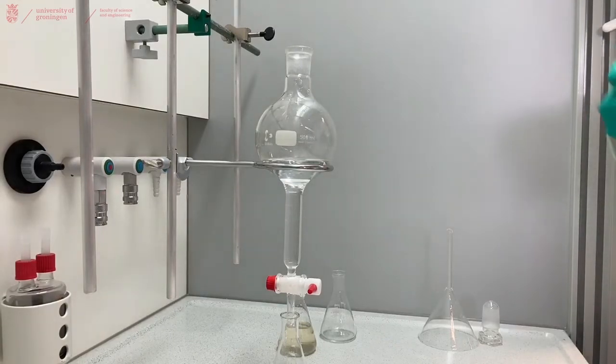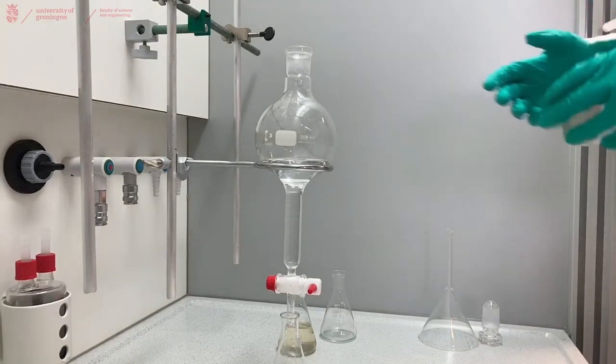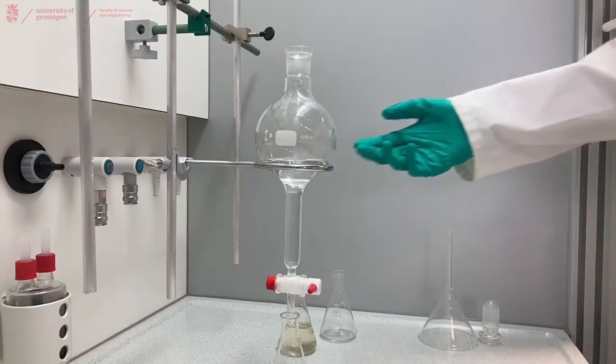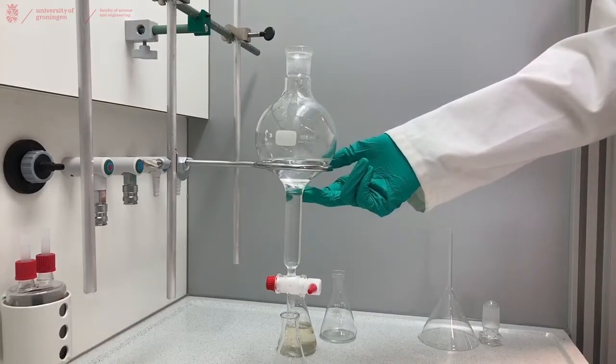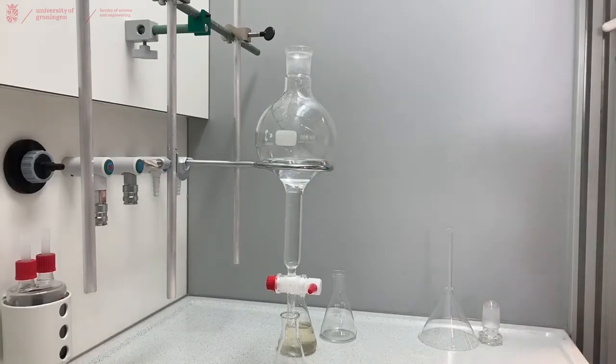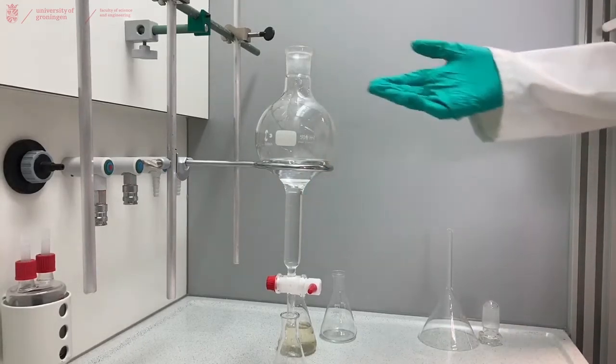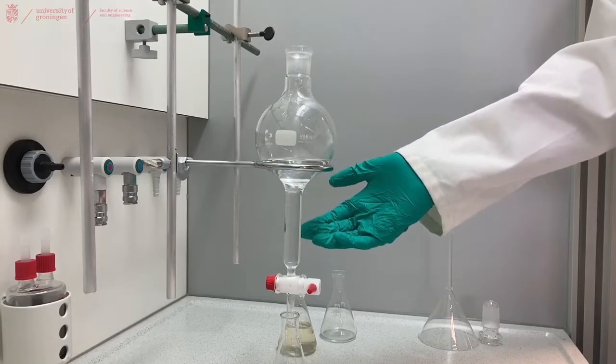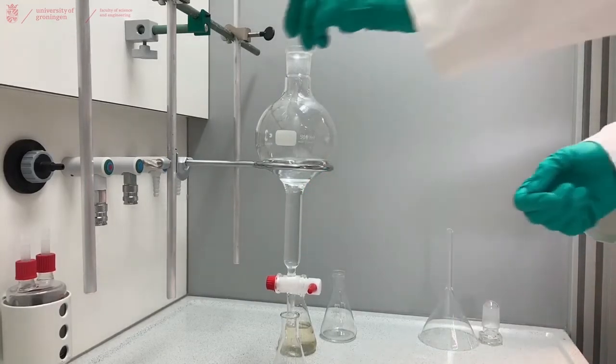Because we now have two colorless layers, we will have to search for our separation. Sometimes it's difficult to see the separation as it's in the part where the separator funnel goes from narrow to wide. By opening the tap slightly, you will see that the separation will show up in this thin part of the separator funnel.